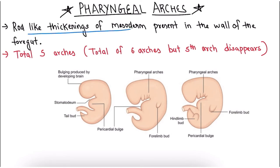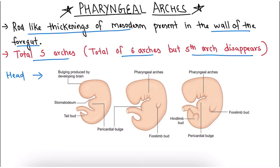Starting with what is pharyngeal arch: these are rod-like thickenings of mesoderm present in the wall of the foregut. There are total five arches but there are six arches during development — the fifth arch disappears. Here we can see the embryo, and this bulging produced by developing brain represents the head, and stomatodeum represents the future mouth.